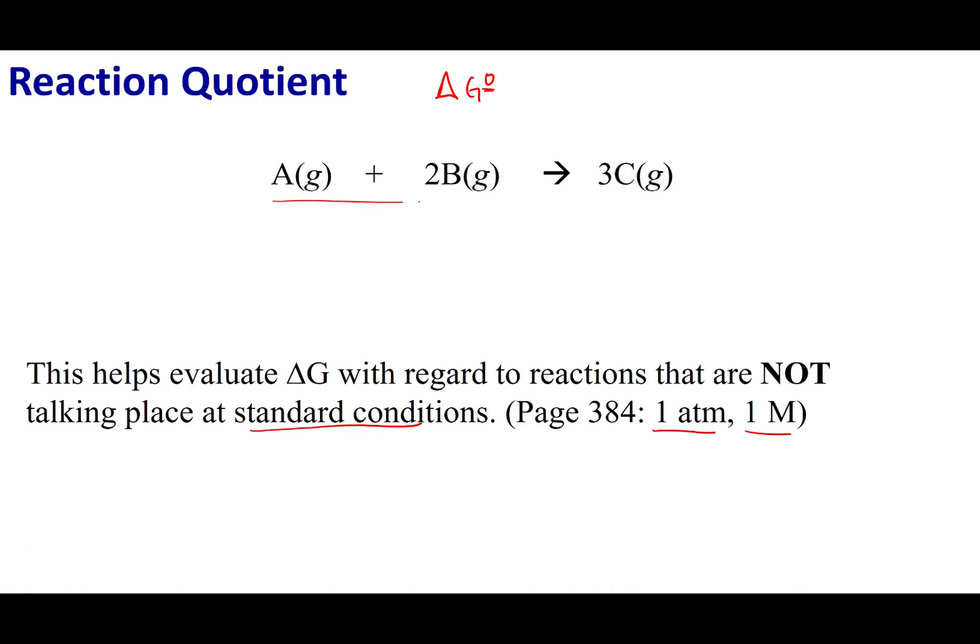Let's go ahead and say that you are running through this reaction right here. And let's say you weren't at one ATM worth of pressure, and this is going to be a common occurrence because not all reactions are going to be under standard conditions. So how are you going to evaluate if this reaction is spontaneous or not? Well, what you want is delta G without the naught. That means I'm calculating the free energy of a system that is not under standard conditions.